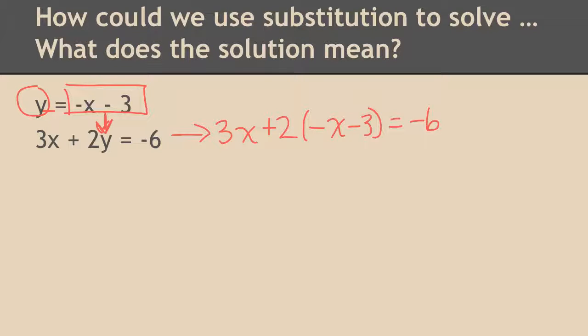So let's do some algebra. 3x is good. But then I'm going to distribute. 2 times negative x is a negative 2x. And 2 times negative 3 is a negative 6.